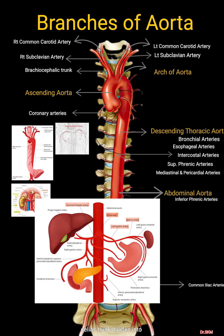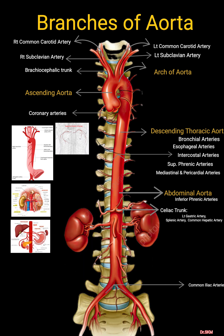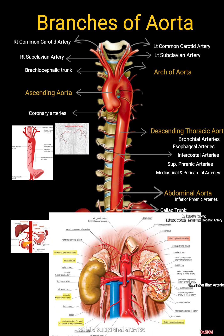The celiac trunk divides into the left gastric artery, splenic artery, and common hepatic artery. Middle suprarenal arteries supply the adrenal glands, renal arteries supply the kidneys, and gonadal arteries — testicular or ovarian.